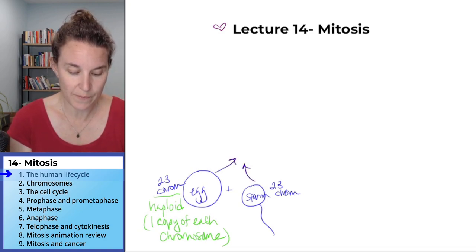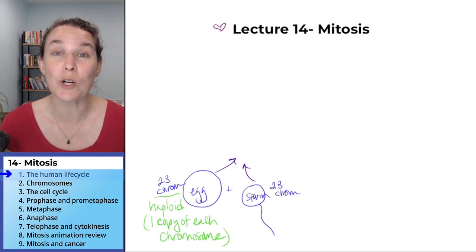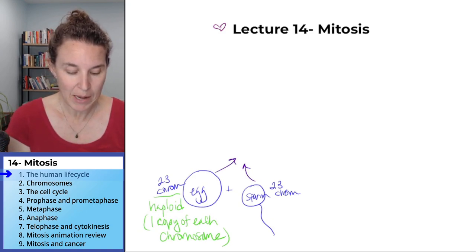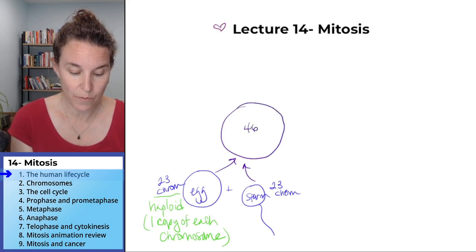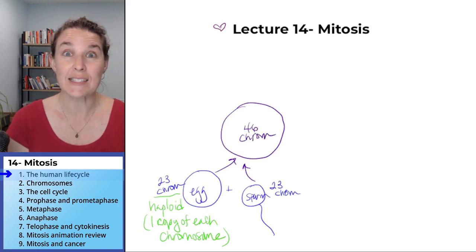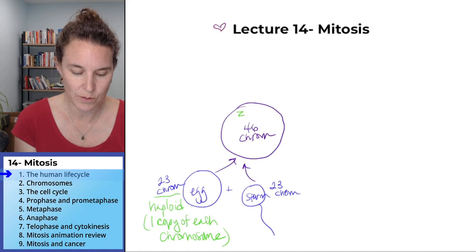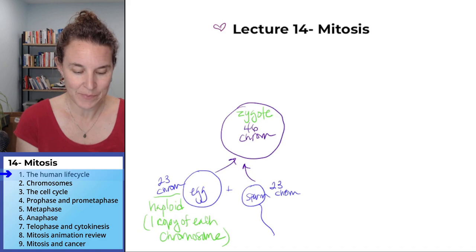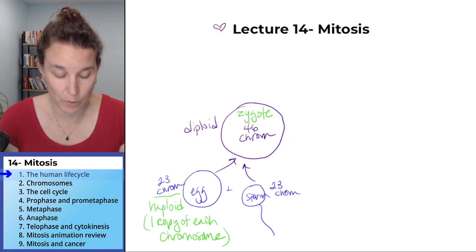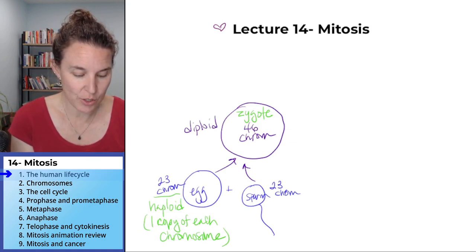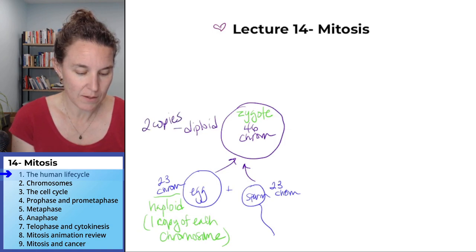When an egg and a sperm combine, they combine their DNA into one cell with 46 chromosomes. That cell is called a zygote. That cell is no longer haploid — it is diploid, which means there are two copies of each chromosome. All the cells in your body are diploid.